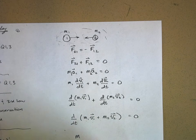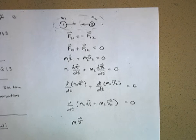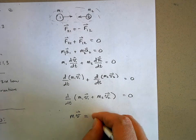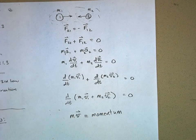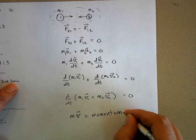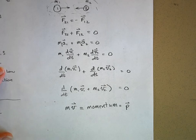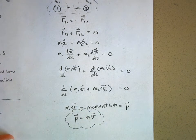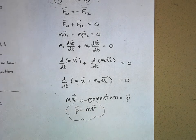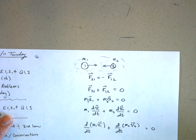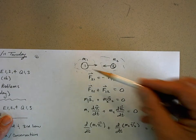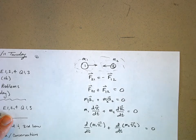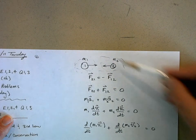The mass times the velocity of each object individually is changing, but when you add them together they don't change. This is such an important idea that we give it a name. The mass of an object times its velocity is, by definition, called momentum, and we give it the variable lowercase p with a vector arrow. So p = mv. That's an important definition you need to know.